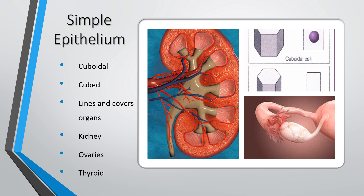The second type of simple epithelium is cuboidal. It also lines and covers the organs, but we find it in the kidneys, the ovaries, and the thyroid gland. It's a bit thicker than squamous epithelium — in the kidneys and ovaries we don't want fluid floating about, so we need that thicker lining.